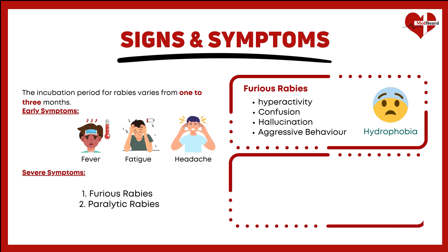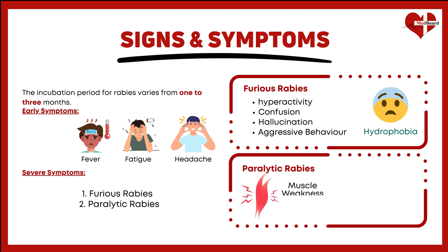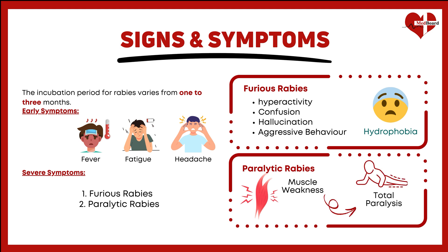In the less common paralytic rabies, patients experience muscle weakness beginning at the site of the bite and gradually spreading. Eventually, it leads to total paralysis. This form can take longer to develop but is equally fatal.